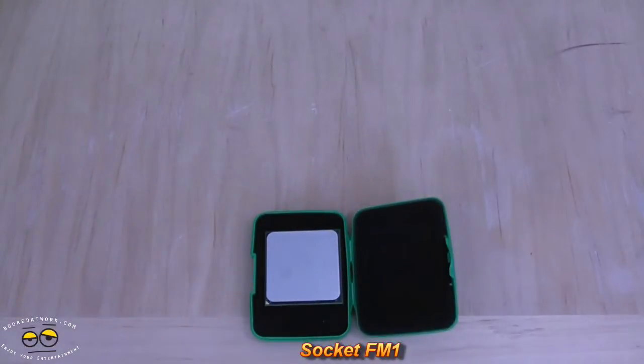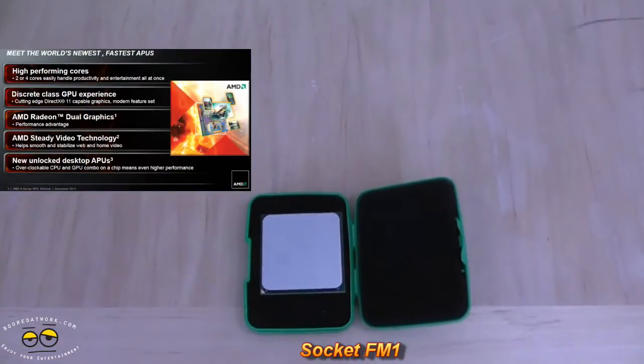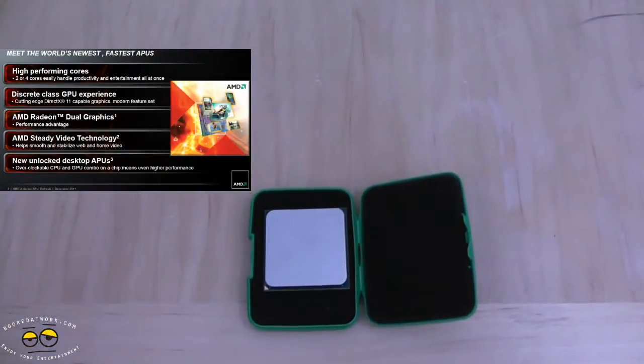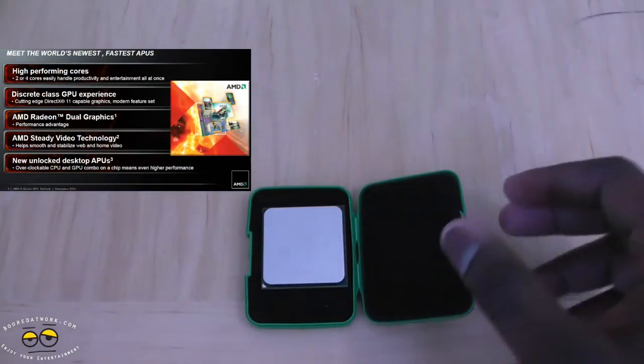Now the benefits of having an APU is that you have your graphics card and CPU together. You can also run a crossfire configuration with this system and this is DirectX 11 capable. You can run dual graphics cards with this.